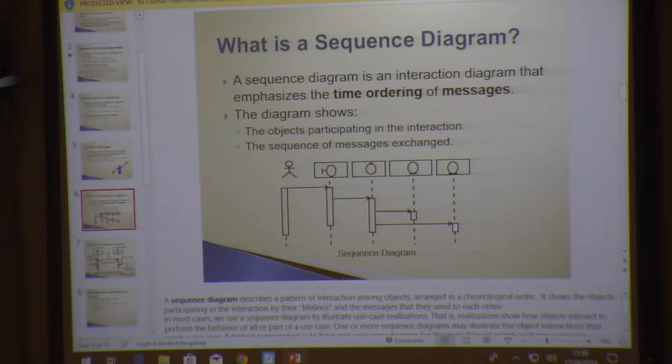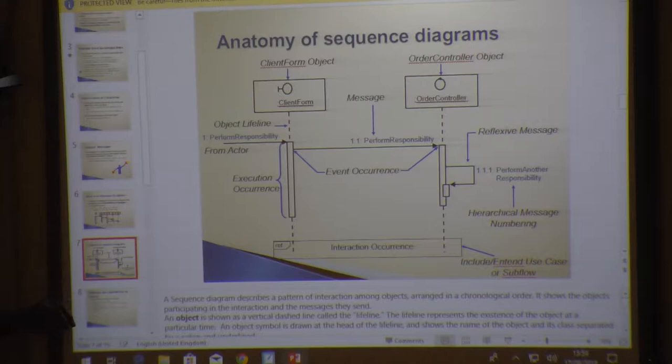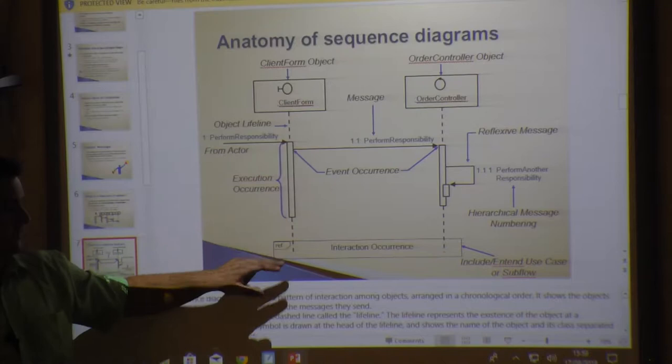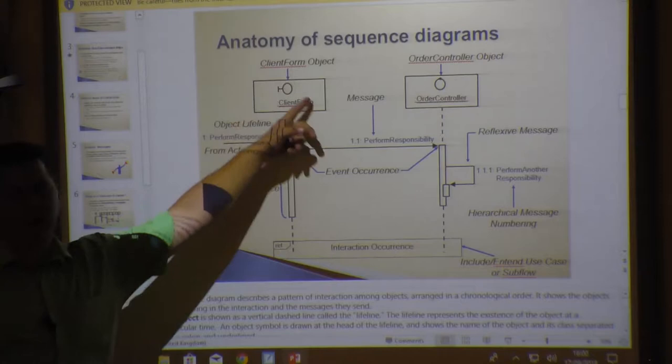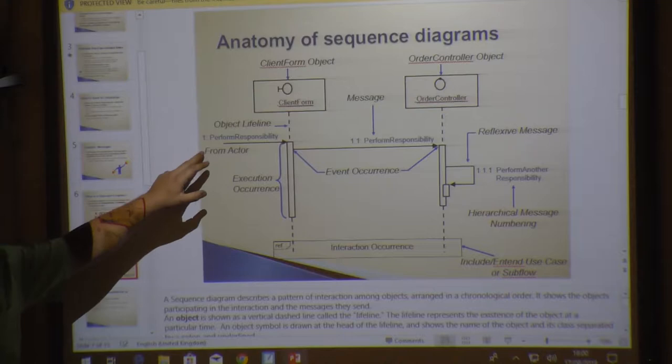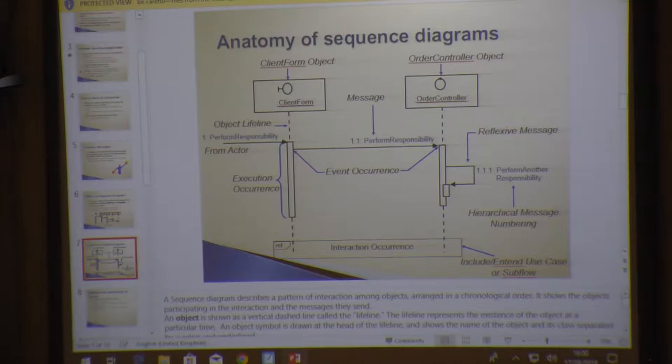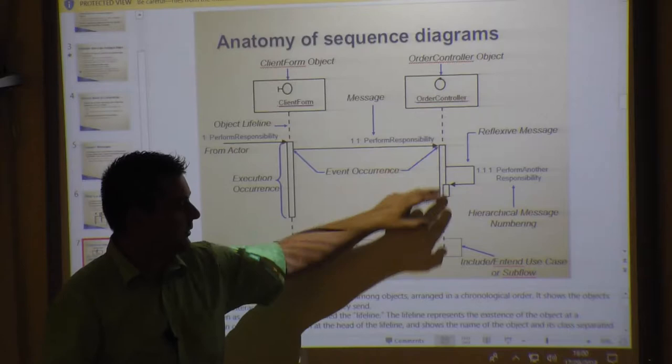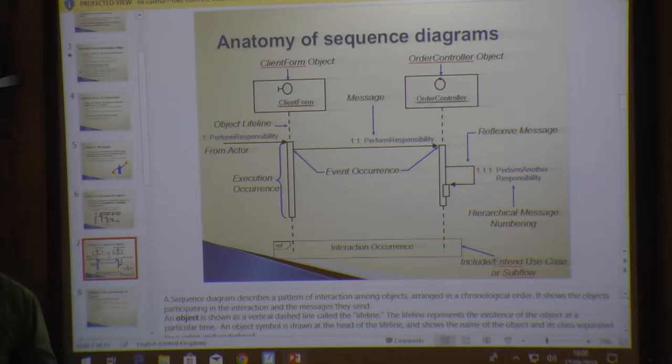So anatomy of the diagram looks as follows: we are having lifelines, these lines that go down. They may be stereotyped and be given different names. This one is saying client form order controller. You might have your message coming in from the actor, then we have this block, it's called execution occurrence, it means that at some point that thing is going to execute. Then we have an event occurrence, some event is now going to happen to continue there. We might also have a reflexive message.